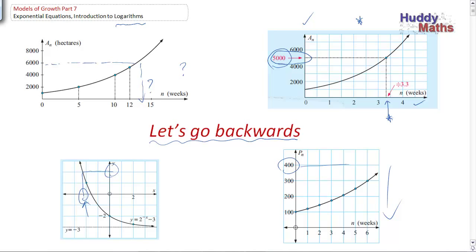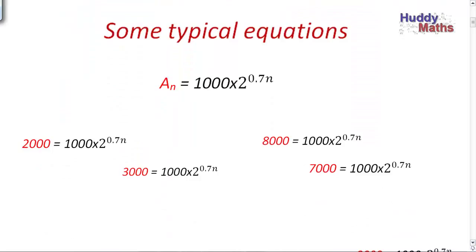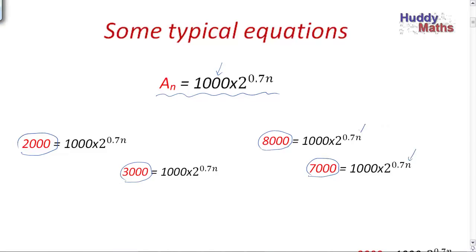Let's go backwards and see what we can do. Looking at some typical equations from Hayes and Harris — this is the spread of the grasshopper plague, starting at 1,000 hectares. When would it be 2,000 hectares? When would it be 3,000? When would it be 8,000? When would it be 7,000? We're providing the value of the dependent variable and saying, when will that happen? Can we find n? Can we go backwards?